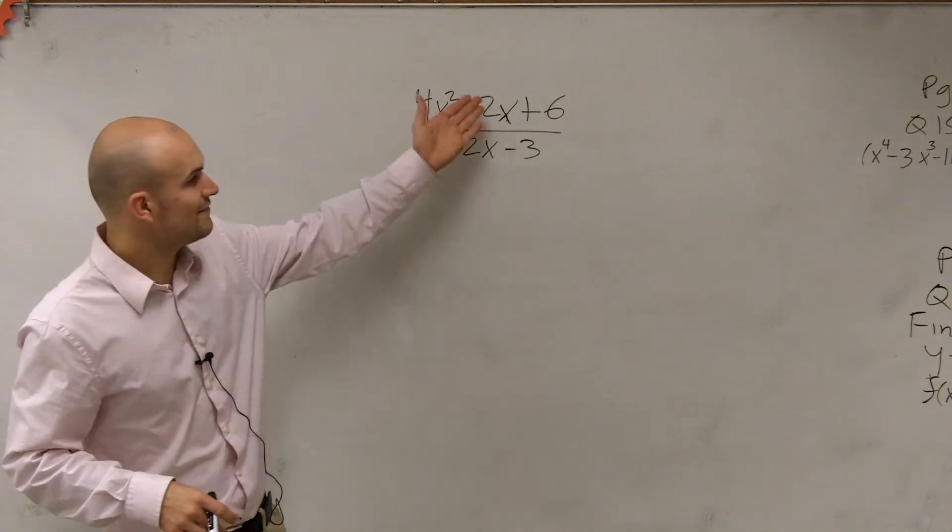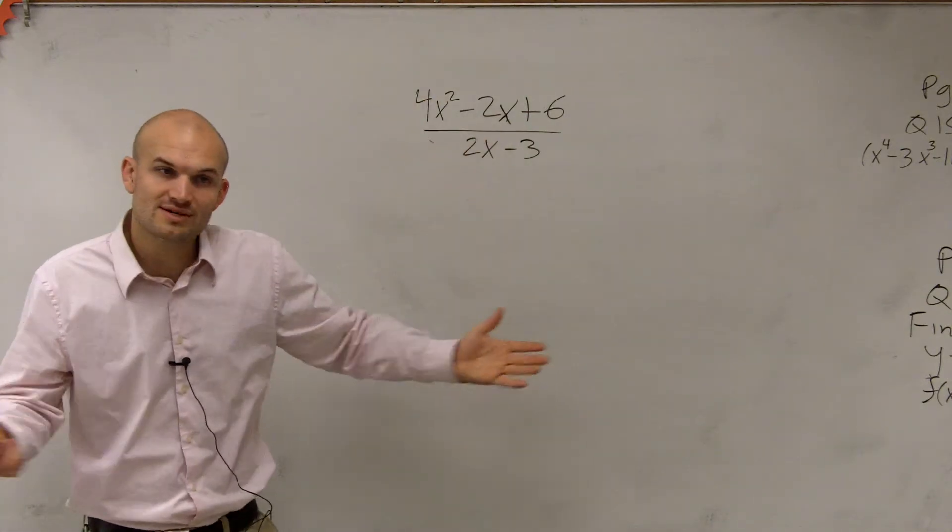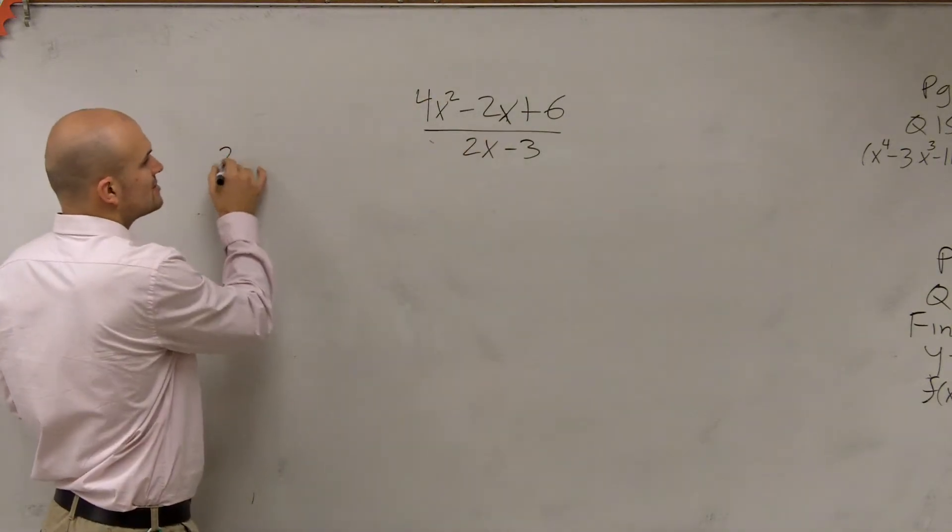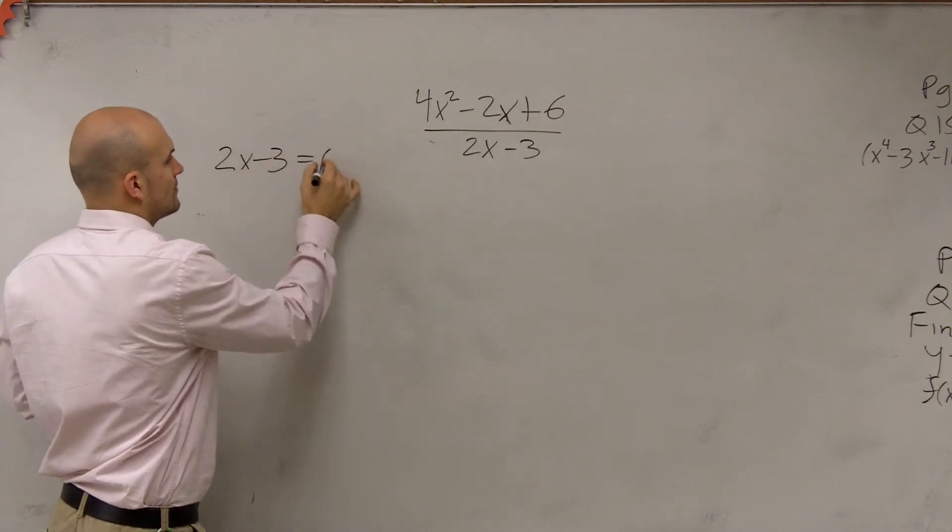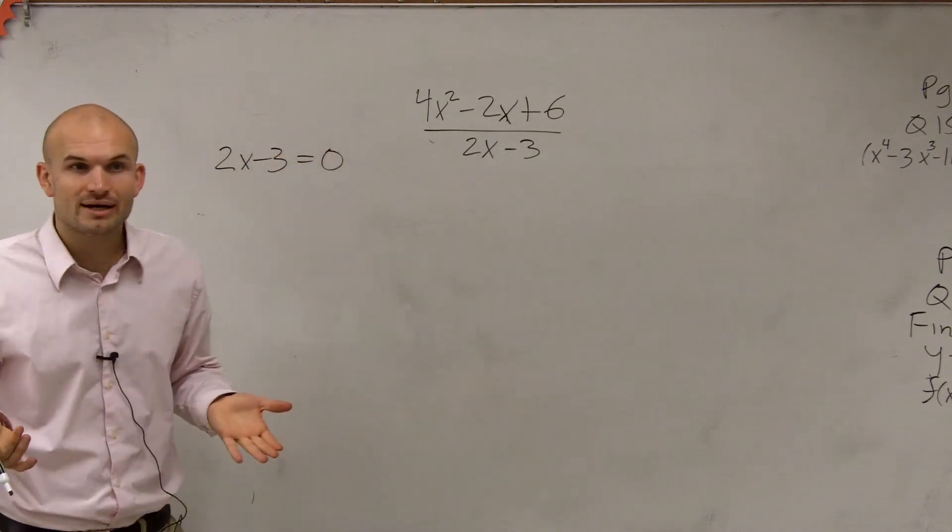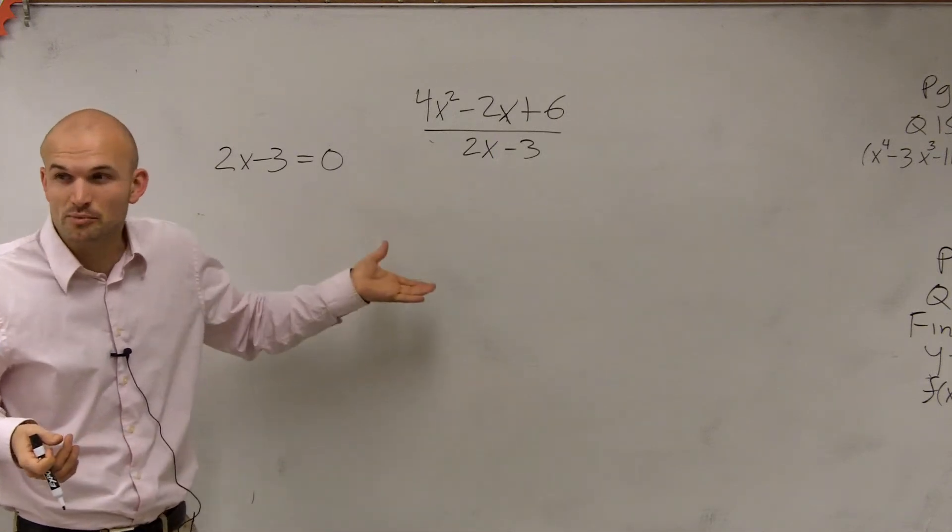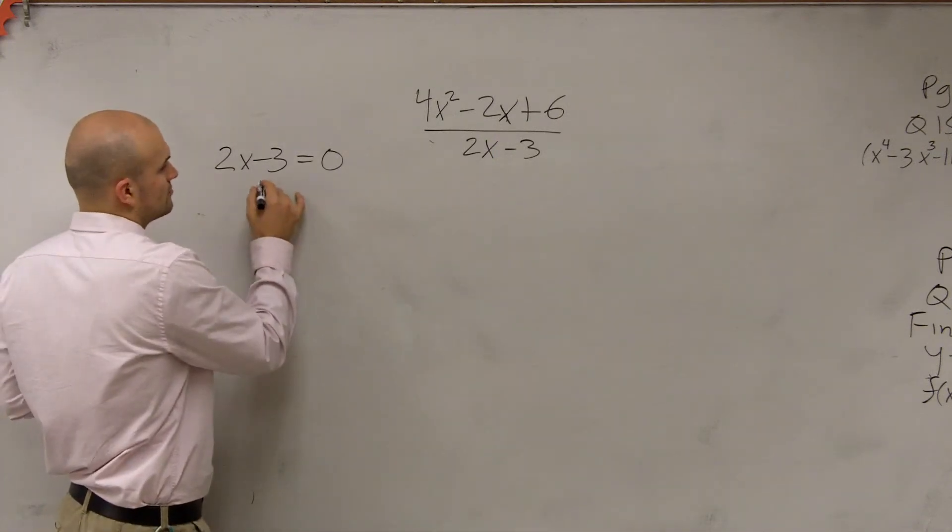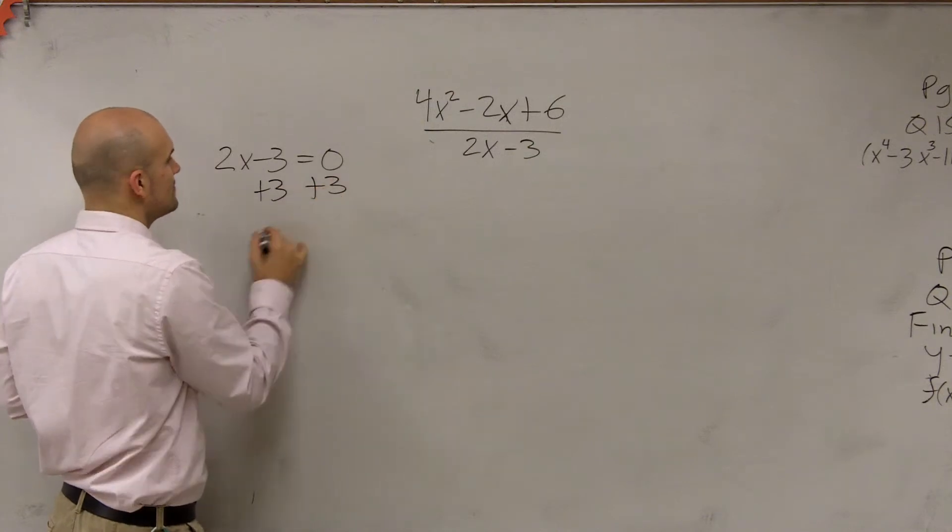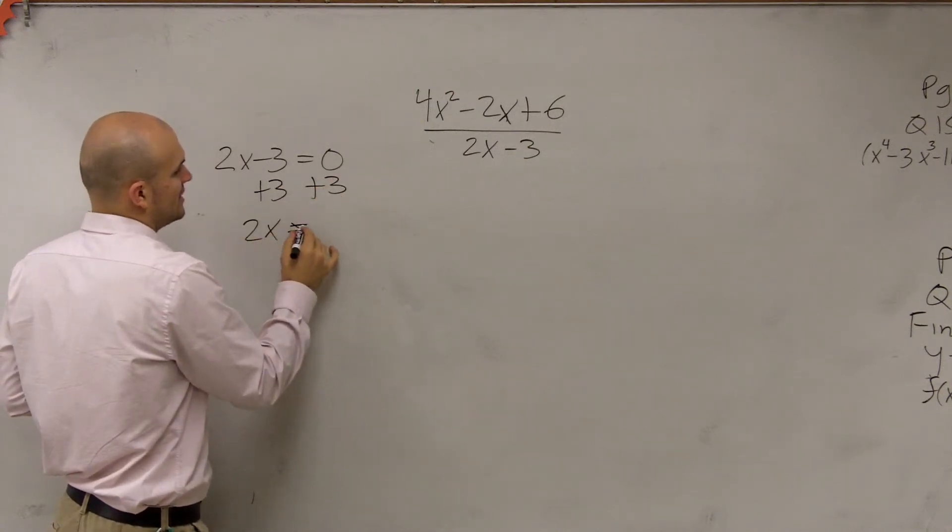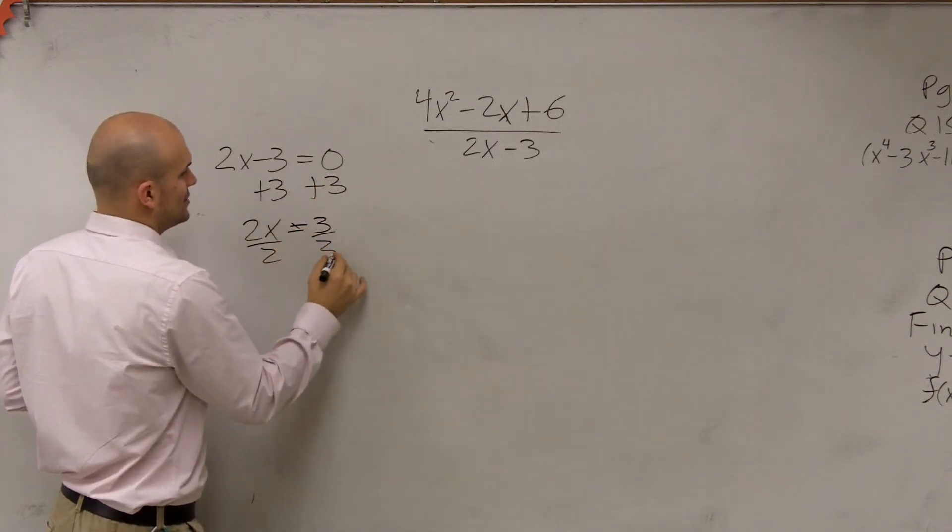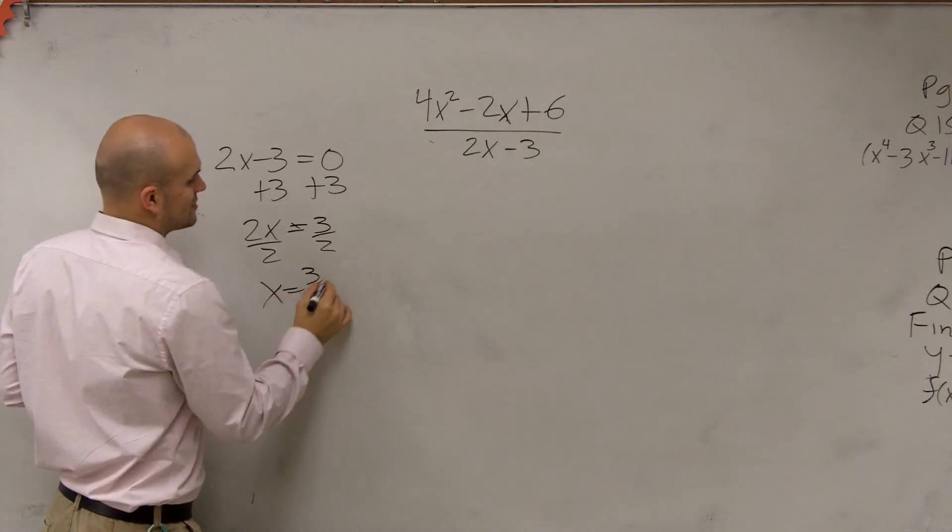So the first thing we look at, we have here's our divisor. So remember, we always set our divisor equal to 0. It doesn't matter what it is. You just set your divisor equal to 0. As long as it's a binomial, you're okay. So I add 3 to the other side. I get 2x equals 3, divide by 2, and x equals 3 halves.